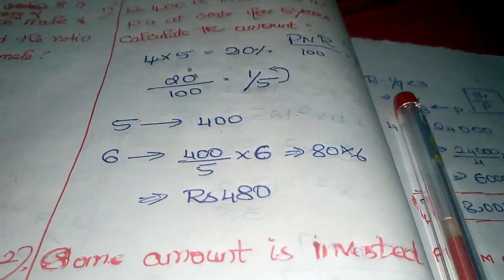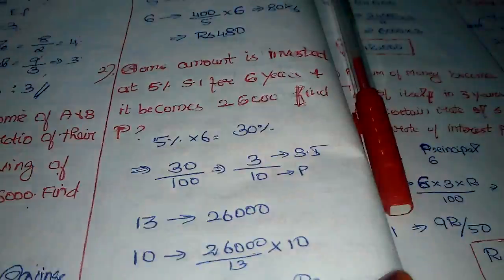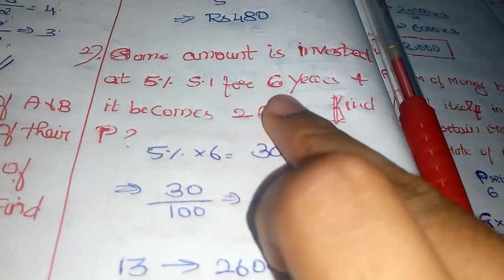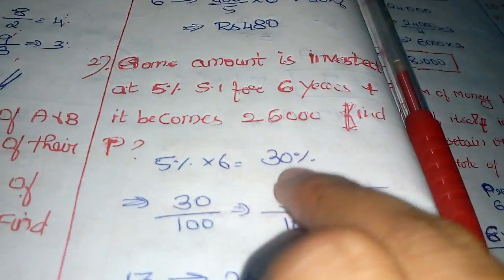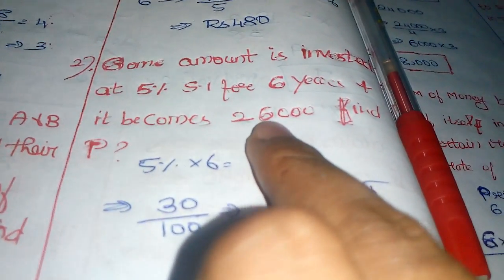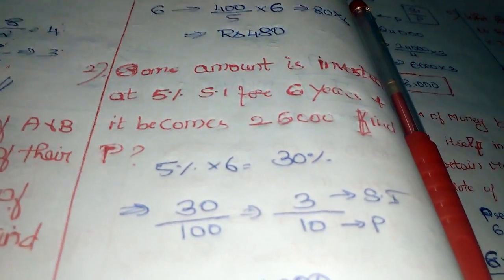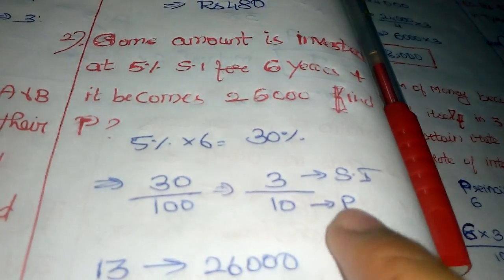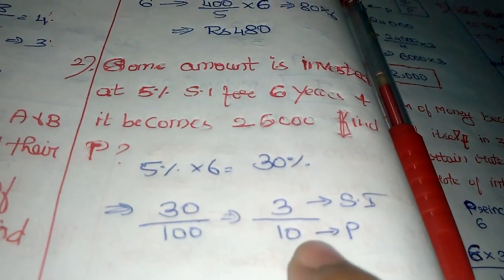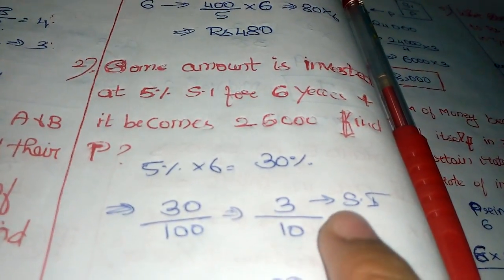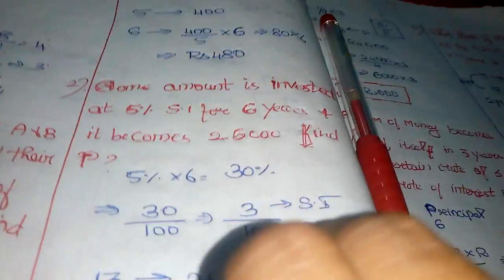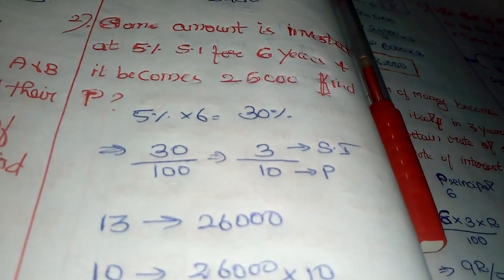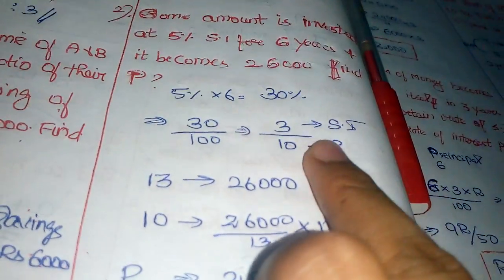Second sum: Some amount is invested at 5 percentage simple interest for 6 years. Interest of 6 years you multiply, that's 30 percentage, and it becomes amount. Now 13 parts equal - 10 parts equal 26,000. So principle is equal to 20,000 rupees.